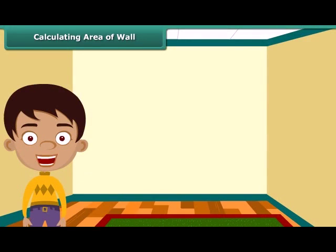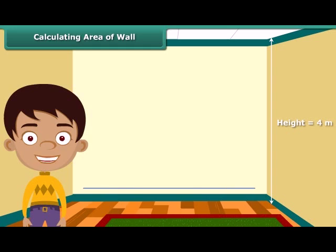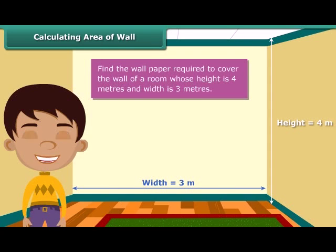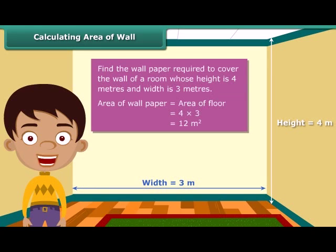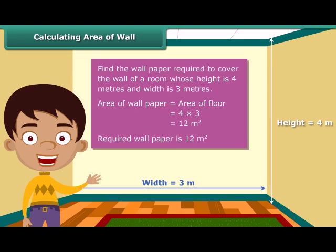Now that we know how to calculate area, let us solve a question based on the concept. Each wall of Nidhi's room is 4 meters high and 3 meters wide. She wants to cover one of the walls with wallpaper and needs to know how many square meters will be required. The area of wallpaper required will be the same as the area of the wall. The area of the wall is 4 meters multiplied by 3 meters, which is 12 square meters. So, 12 square meters of wallpaper will be required to cover the wall.